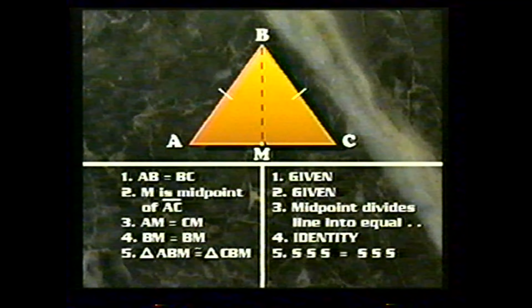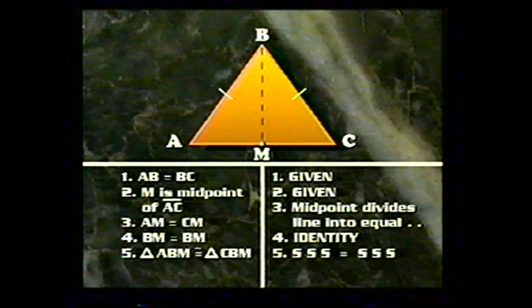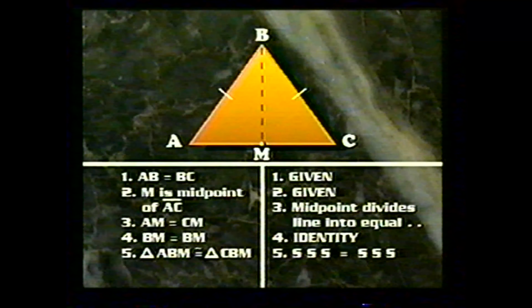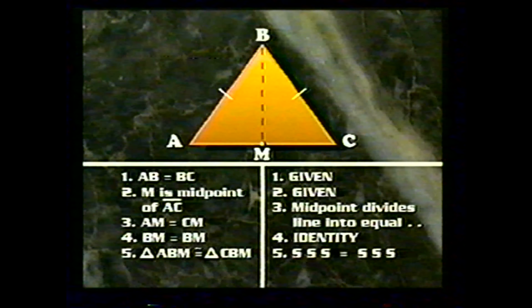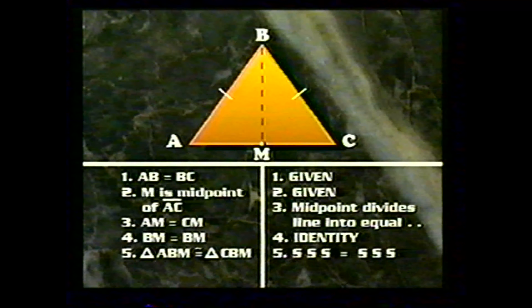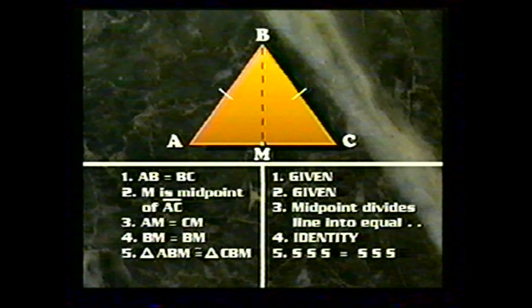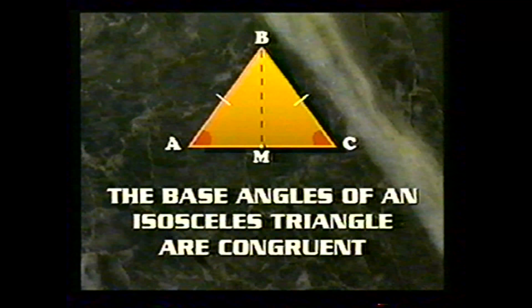This leads to another valuable result. Since the two triangles are congruent, corresponding angles are congruent. In particular, angles BAM and BCM are corresponding angles — they are both opposite side BM and both included between congruent pairs of sides. So angle BAM must be congruent to angle BCM. These angles are the base angles of the original triangle ABC. We have proven the important theorem that the base angles of an isosceles triangle are congruent.